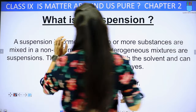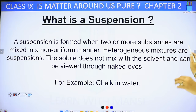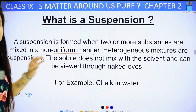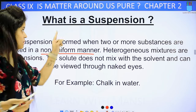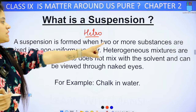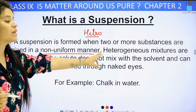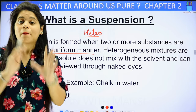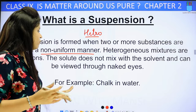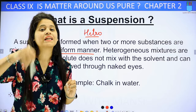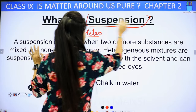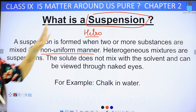What is suspension? A suspension is formed when two or more substances are mixed in a non-uniform manner. Non-uniform mixing means it is a heterogeneous mixture. In a suspension, the solute does not mix with the solvent and the particles can be viewed through the naked eye — you can see that the two things are different. For example, chalk in water: if you powder the chalk and mix it in water, you will see the chalk particles. So it is not a solution; it is a suspension.